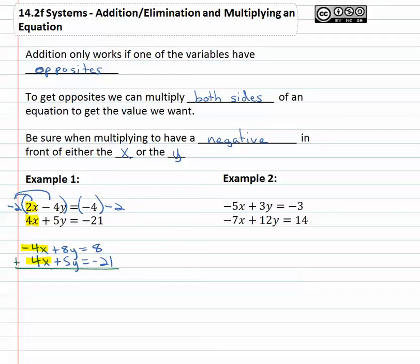When we add the equations together, those are going to subtract out to zero, leaving 13y = -13. Finally, to get the y alone, we divide by thirteen, giving us y = -1.